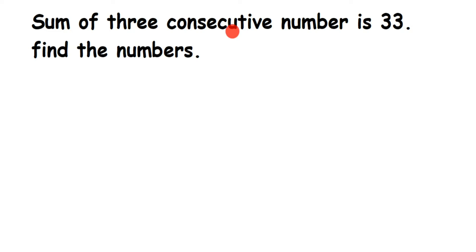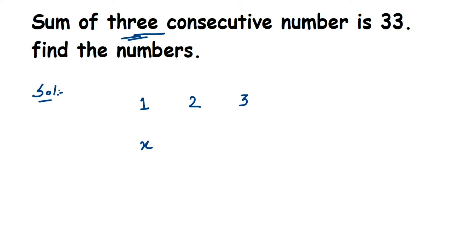We don't know what the three consecutive numbers are — when added up they should give 33. Since all three numbers are unknown, we have to assume a variable. Let the first number be x. To clarify, suppose the first number is 1 — this is just an example to explain how we take consecutive numbers. The first number is 1, so the next consecutive number will be 2, then 3, and so on. We only need 3, so we stop there. In our question the first number is unknown, so we use x.